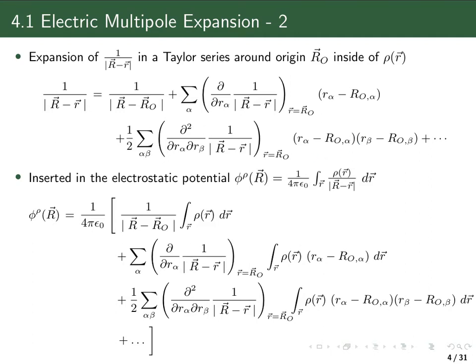Since we are working with vectors, we have a double sum over Cartesian components alpha and beta, summing over x, y, and z. Inserting this expansion of 1 over |R minus r| into the expression for the electrostatic potential, we can take out of the integral all terms that are constant — that is, those that don't depend on little r. The derivatives can also be taken out because they are evaluated at the origin and are thus not dependent on the integration variable r.